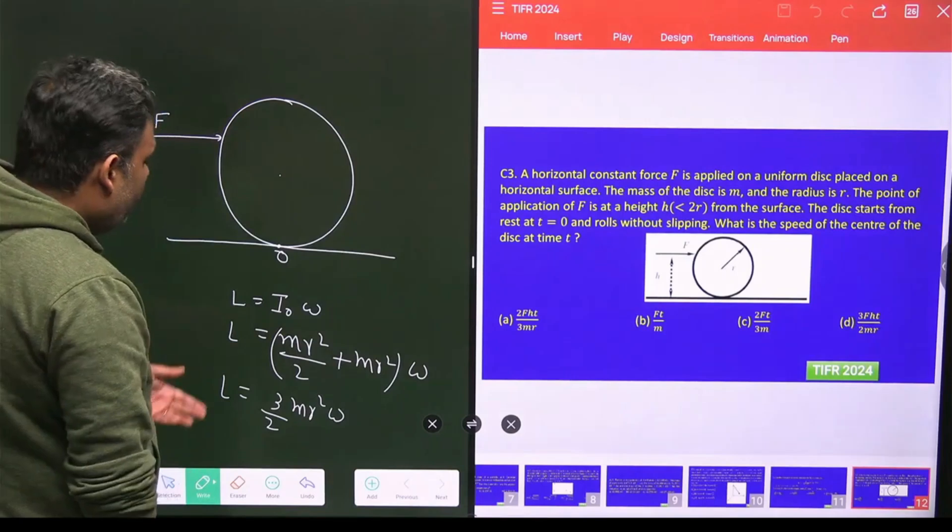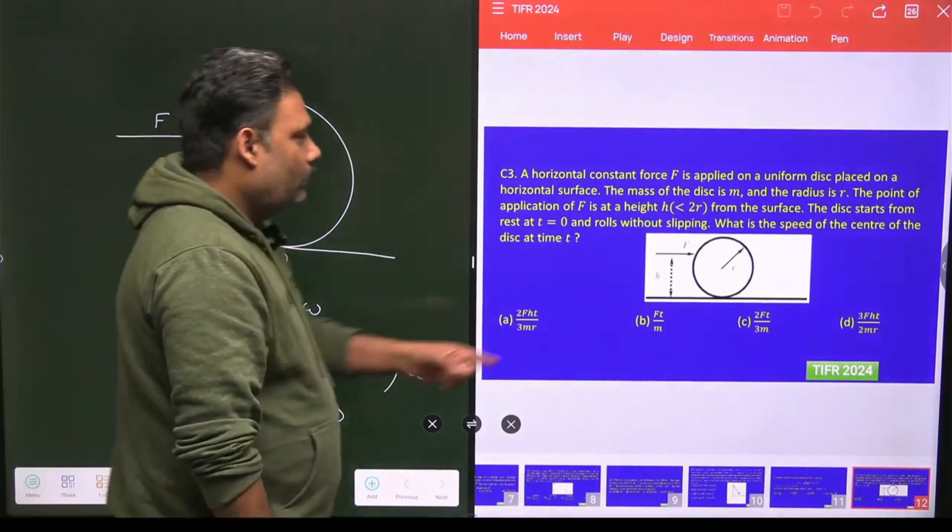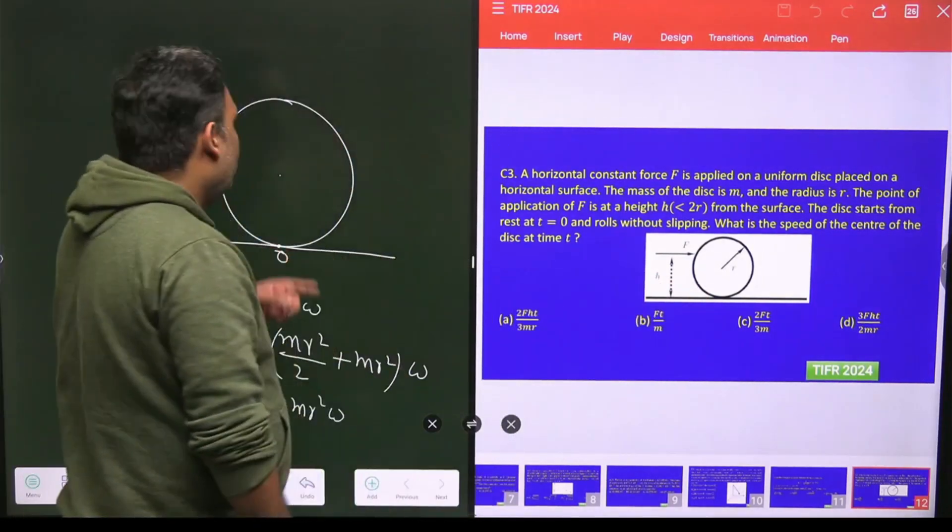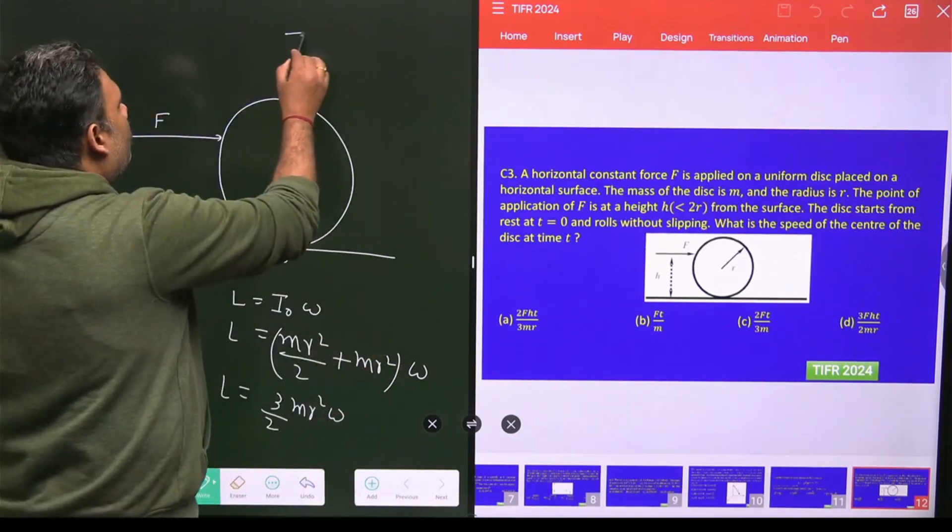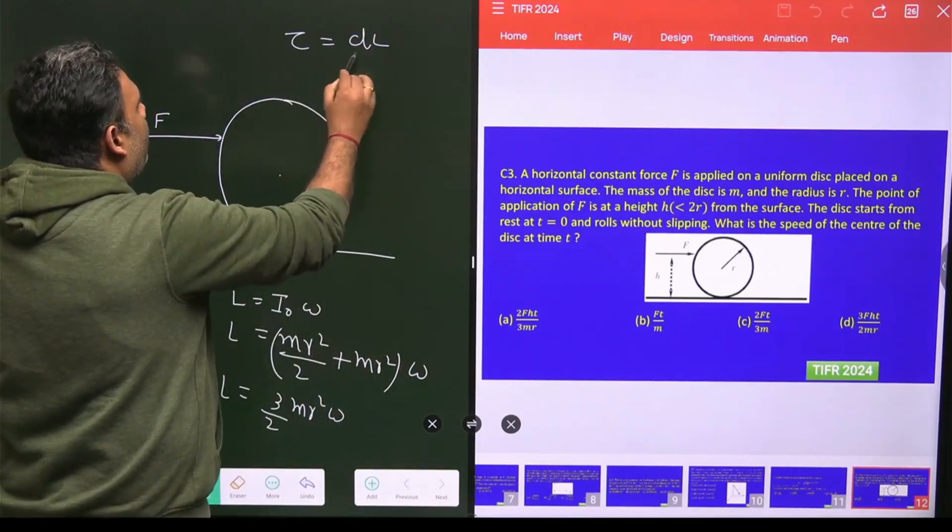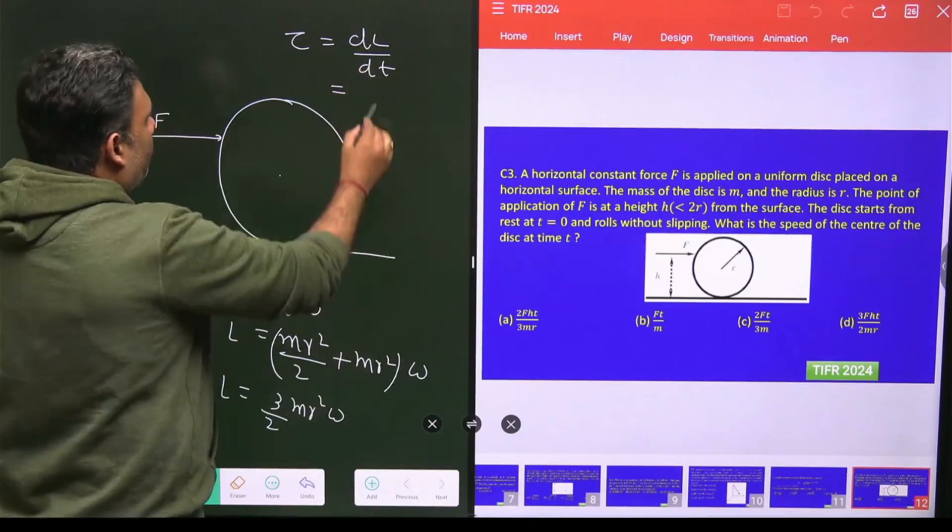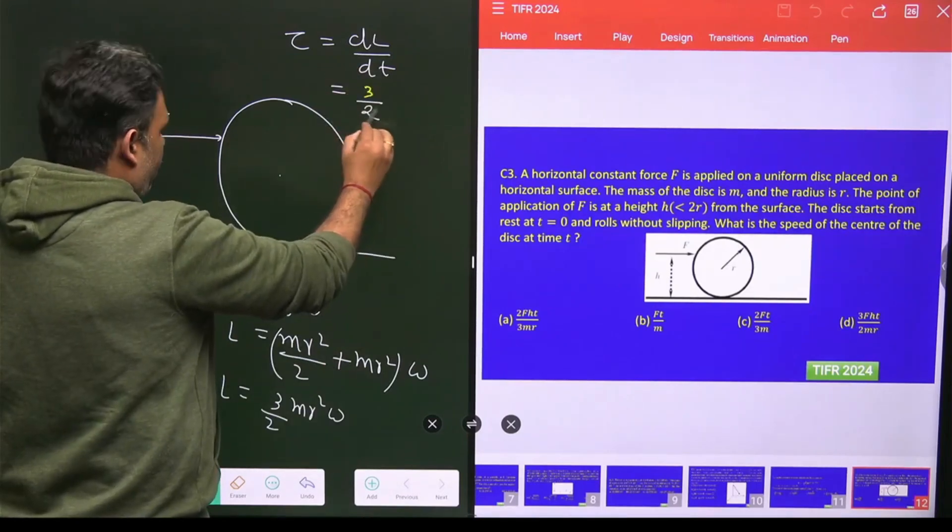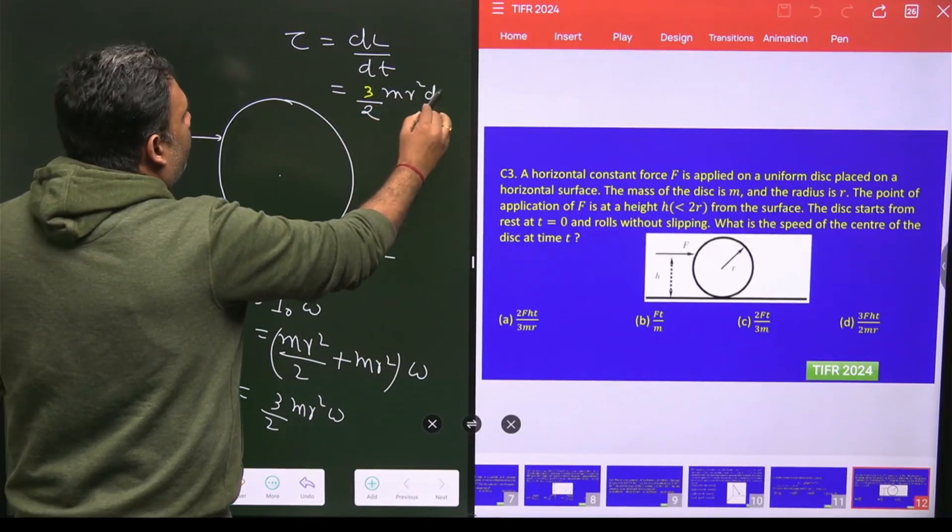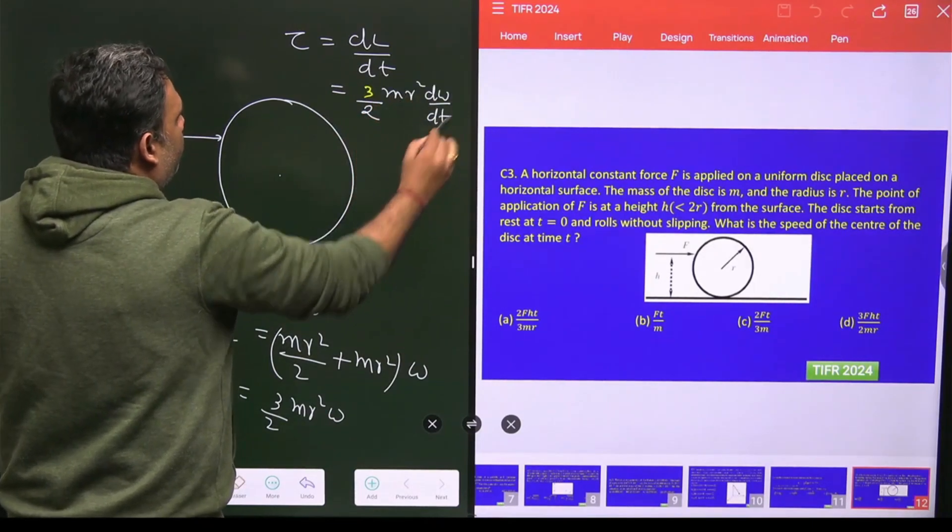Now we can easily find the torque about this particular point. So what is torque? Torque is nothing but dL upon dt. So once we find this torque, this value equals 3 by 2 mr² d omega upon dt. And this is my external torque.